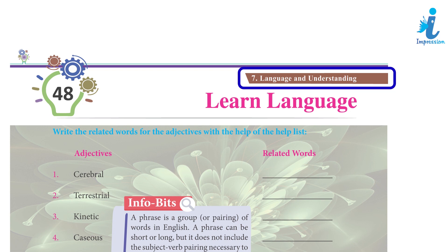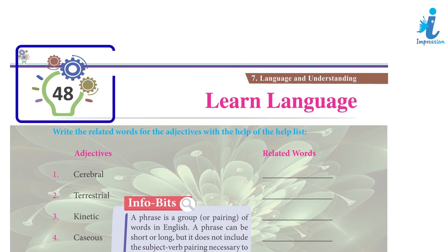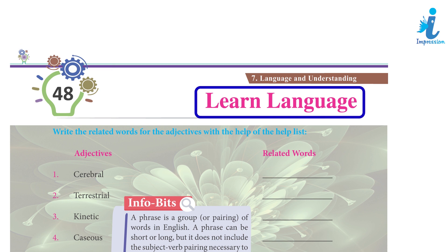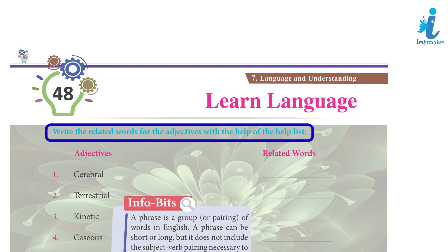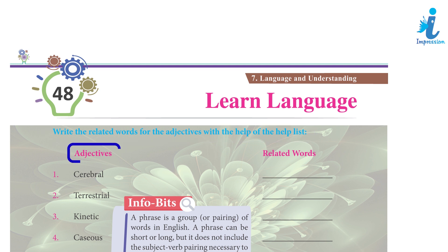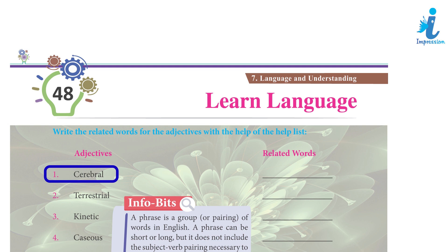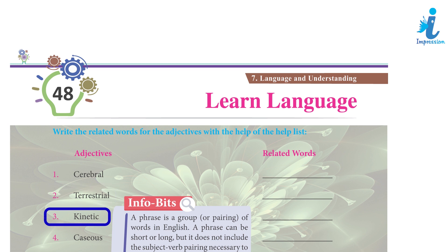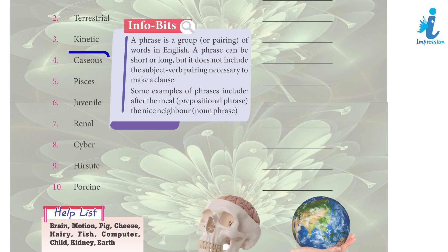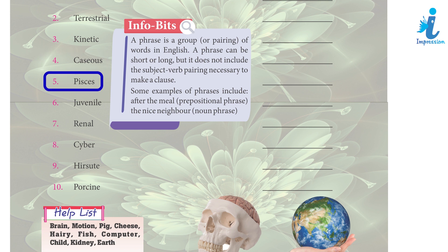Unit 7: Language and Understanding, Chapter 48 — Learn Language. Write the related words for the adjectives with the help of the help list. Adjectives and related words: 1. cerebral — brain, 2. terrestrial — earth, 3. kinetic — motion, 4. caseous — cheese, 5. Pisces — fish.